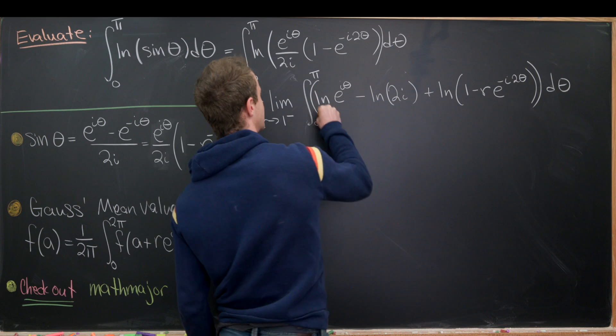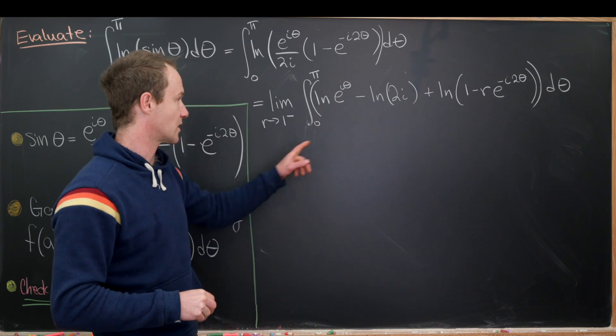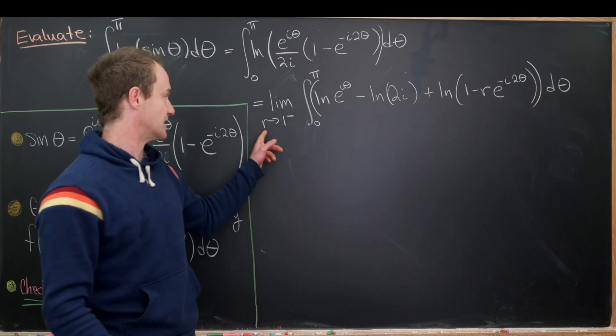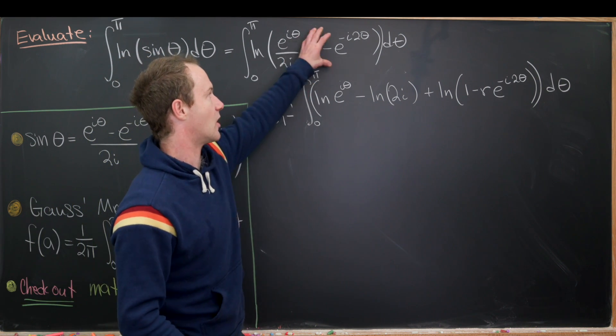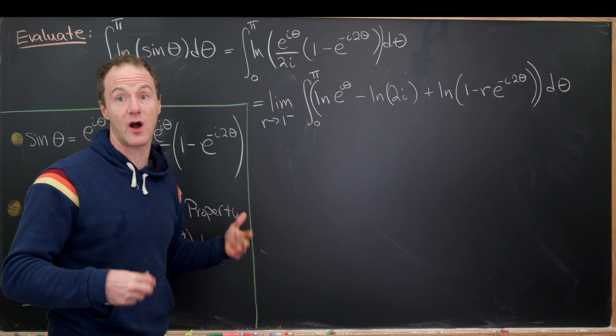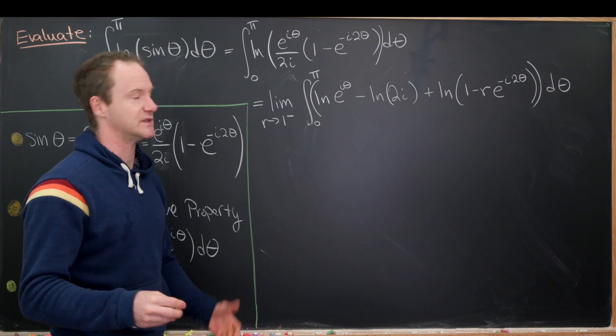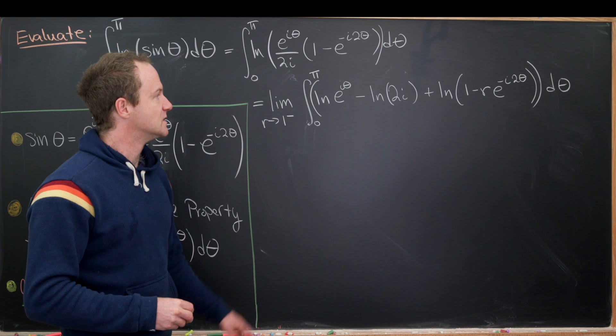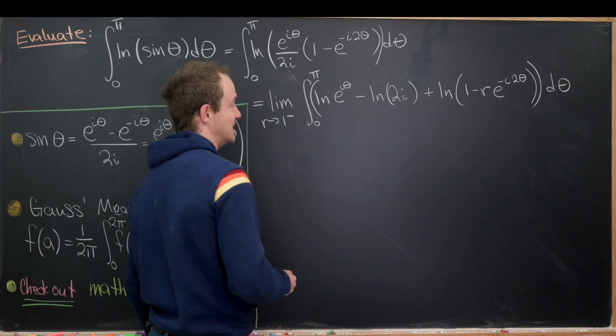Okay, so just to reiterate what I've done, I've replaced this number 1 here with an r and took the limit as r goes to 1 from below. And then I used logarithm rules to split the argument, which is a product and a quotient of stuff, into a sum and a difference using logarithm stuff. Okay, so now we'd like to apply the logarithm to each of these.